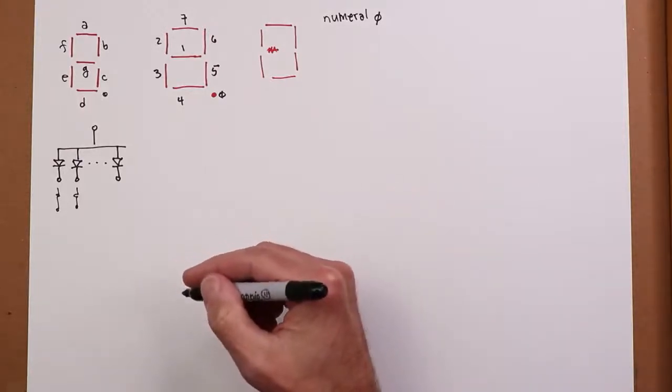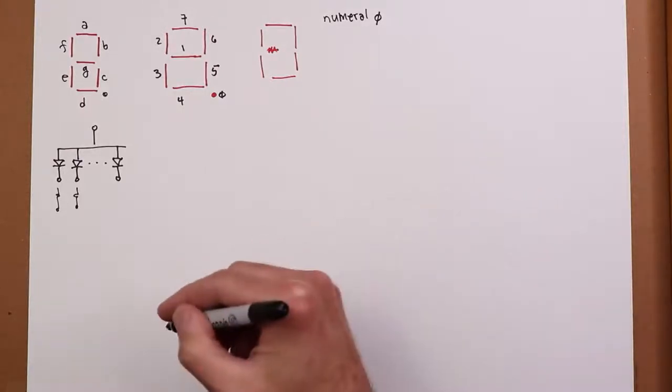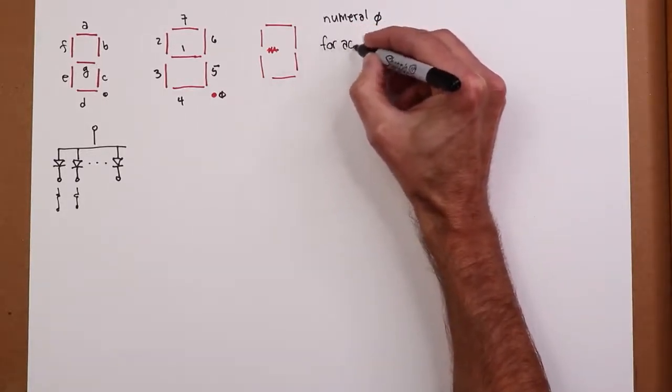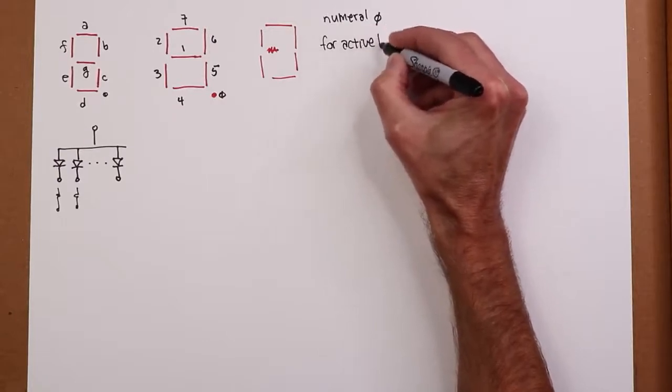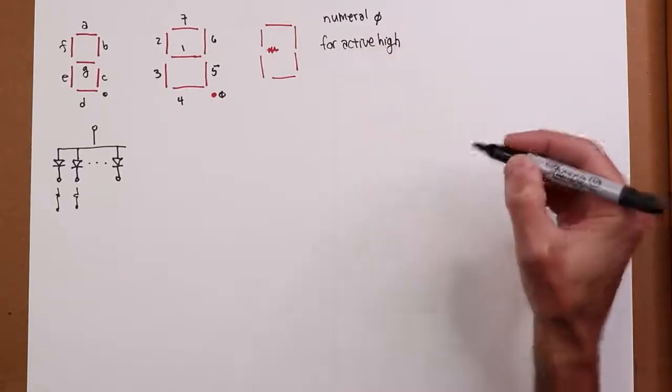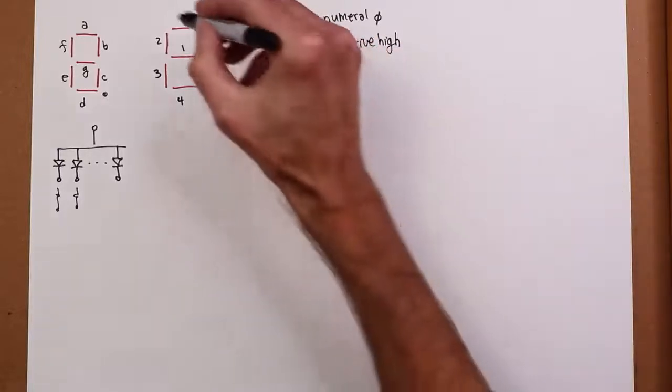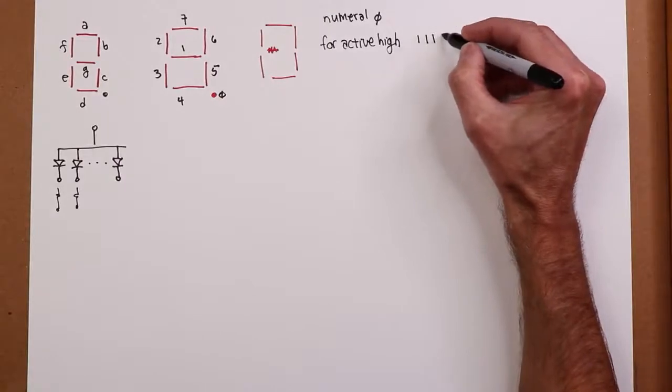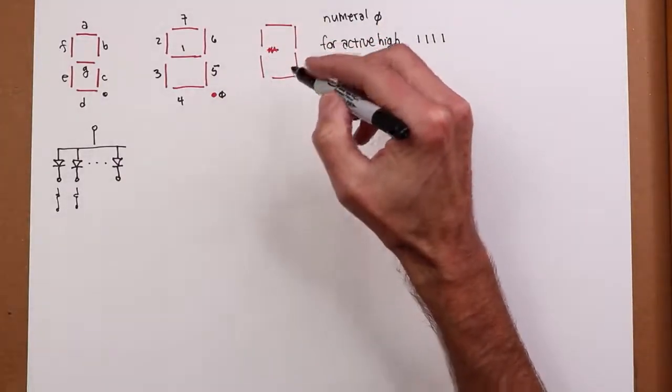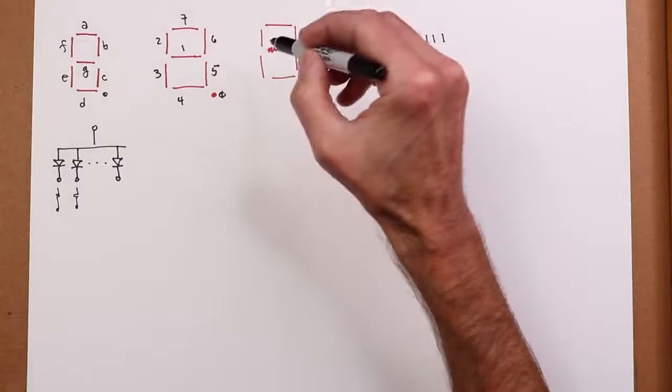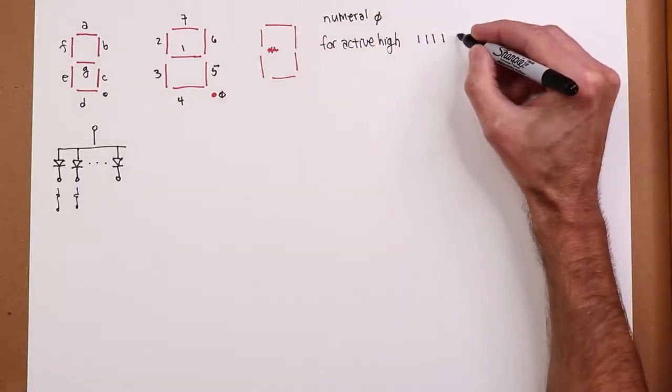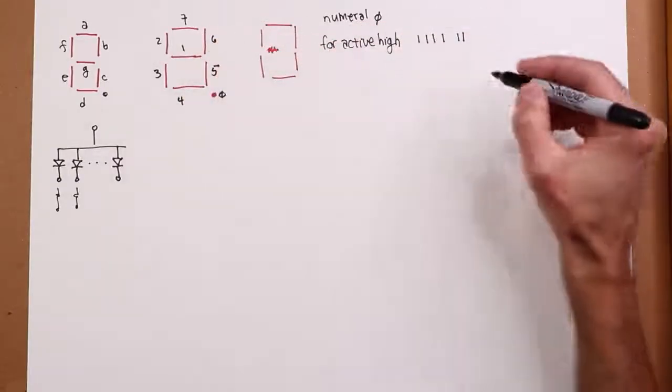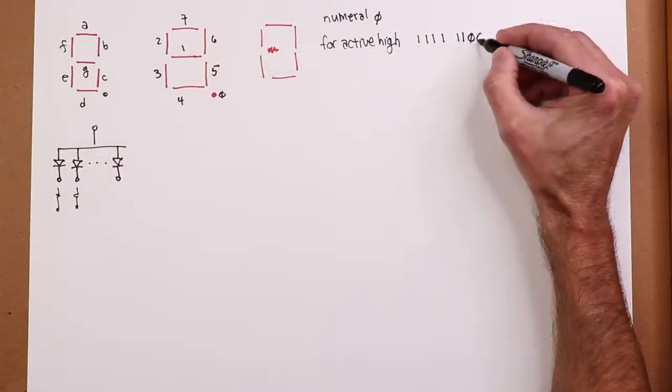And we can configure this in either what's called active high or active low. So if I were to do active high, what we wind up with is a bit pattern that looks like this. Seven, six, five, four. That's the first nibble. And then we have the remaining couple of bits here, the three and the two. And then, of course, one and zero. They're not lit. So you get zero out of that.